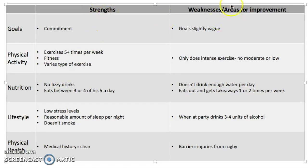Now I'm going to talk about the strengths and weaknesses identified from the health questionnaire. The first strength is his commitment — when asked how committed he is to achieving his goals out of 10, he said seven, showing he's pretty committed. This is a strength as it shows he's motivated and will hopefully put in the time and effort. Another strength is that he exercises five or more times a week, which is really good as it's recommended that 18-year-olds do at least 60 minutes of physical activity per day — my client is meeting this.